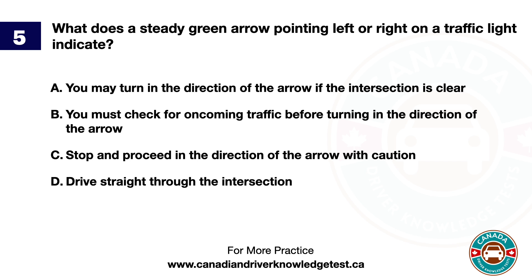Question 5. What does a steady green arrow pointing left or right on a traffic light indicate? A. You may turn in the direction of the arrow if the intersection is clear. B. You must check for oncoming traffic before turning in the direction of the arrow. C. Stop and proceed in the direction of the arrow with caution. D. Drive straight through the intersection. The answer is A. You may turn in the direction of the arrow if the intersection is clear.